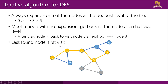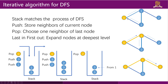There is a data structure that fits this last-found-first-visit manner: the stack. When we store neighbors of a node we push them onto the stack, and when we choose a node to visit we pop it from the stack. The stack has a last-in-first-out manner, which helps us expand nodes at the deepest level. For example, node 0 has children node 1 and node 3; we push them, and node 1 is closer to the top so we pop it first.